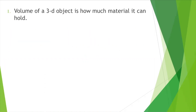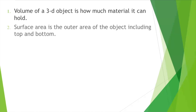By volume of a three dimensional object, we know how much material it can hold. Surface area is the outer area of the object including top and bottom.